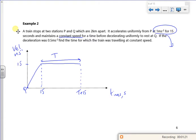It then decelerates uniformly to rest with a deceleration of half a meter per second squared. So it drops down from 15 meters per second down to zero meters per second. So it implies it's going to take 30 seconds to stop. So if it takes 30 seconds to stop, that's T plus 45. It tells you that the stations are two kilometers apart, so that's where Q is.